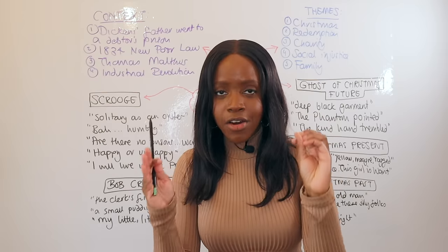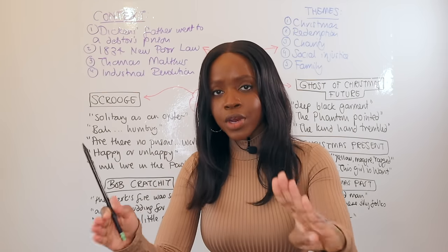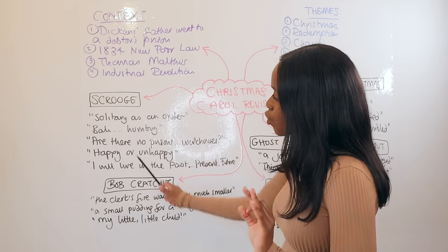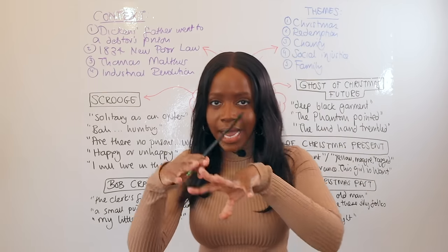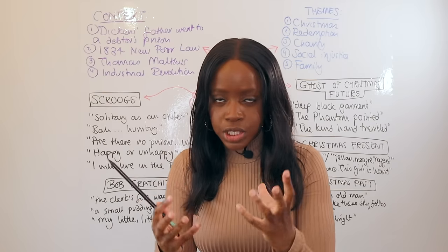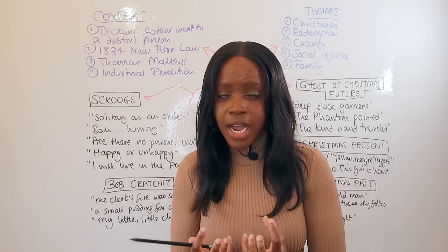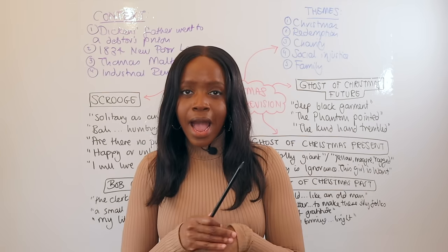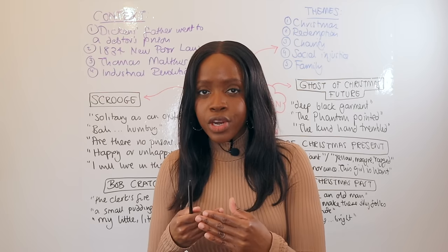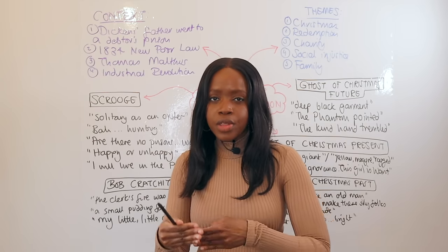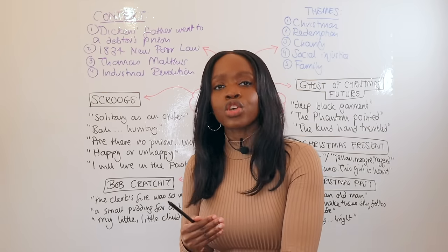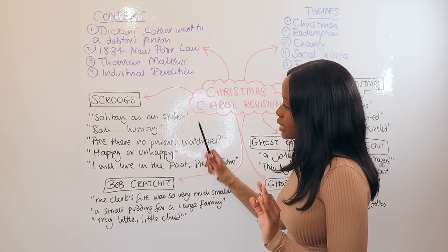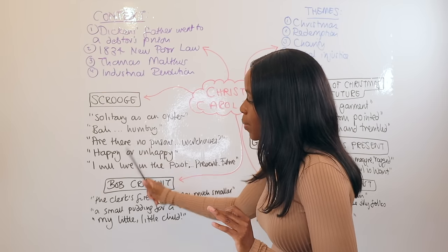Now let's look at the main quotations. Starting with Scrooge: the first key quote is the simile 'solitary as an oyster,' which encapsulates Scrooge at the beginning of the novel. He's quite solitary and totally cut off, and Dickens shows that his greed only makes him more miserable. When he later became more charitable and was around other people, he was less solitary. The second quotation is 'Bah! Humbug!' — showing his disdain for Christmas, which of course later changes.